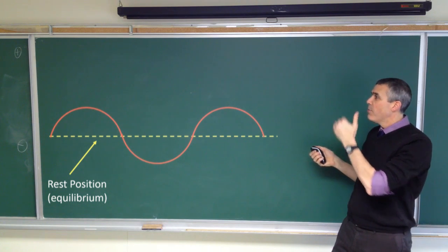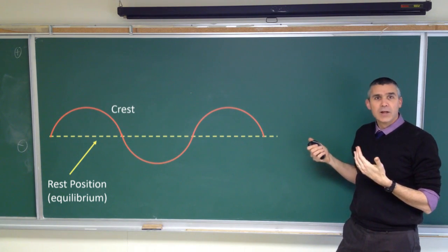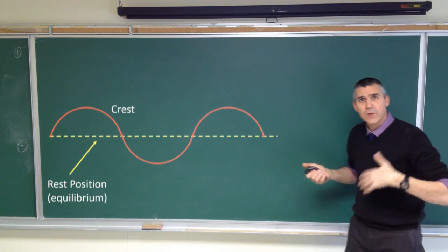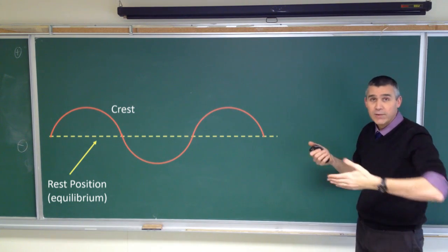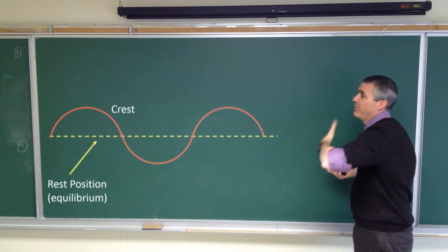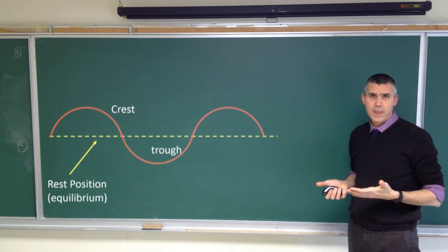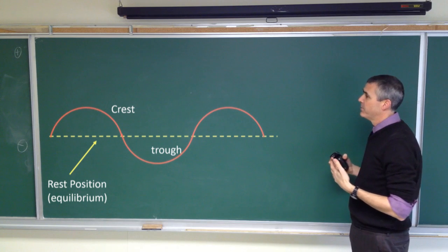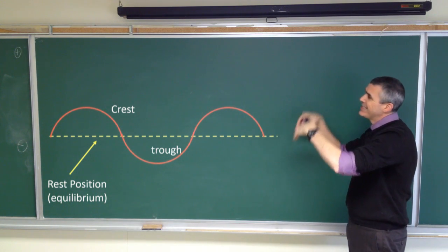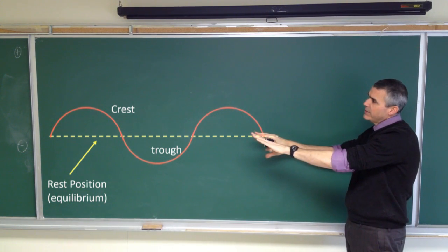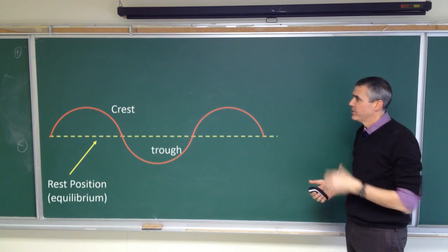When we have an upward displacement, we call it a crest, and we get that term from water waves. And then when we go below the rest position, it's called a trough. Again, the terminology comes from water waves, but the trough is that downward displacement away from rest position - crests and troughs.